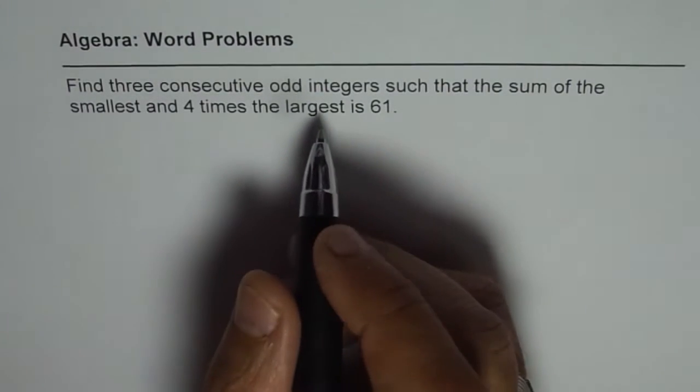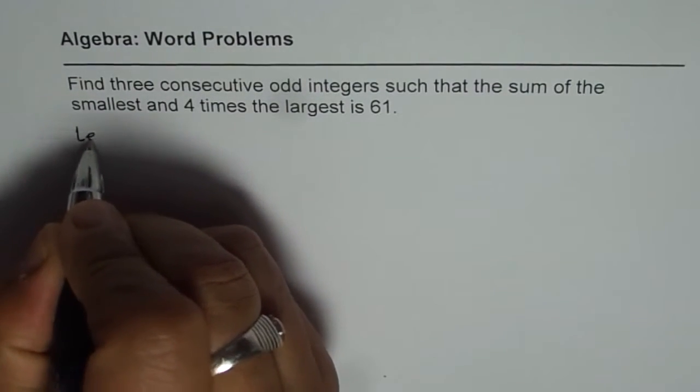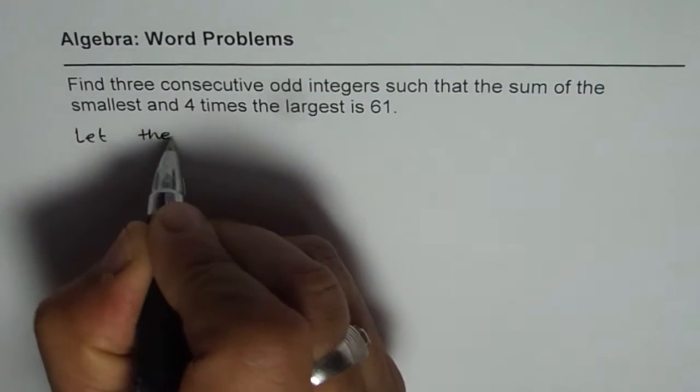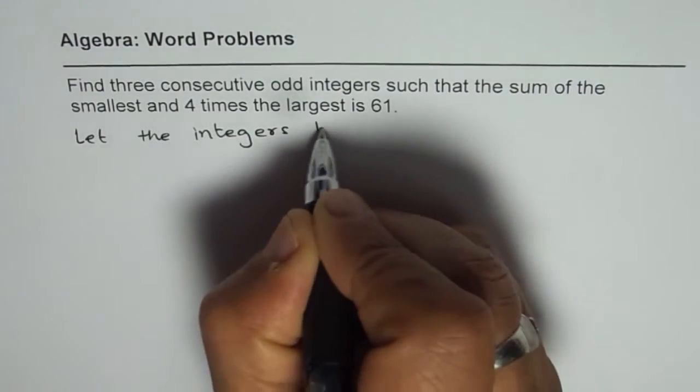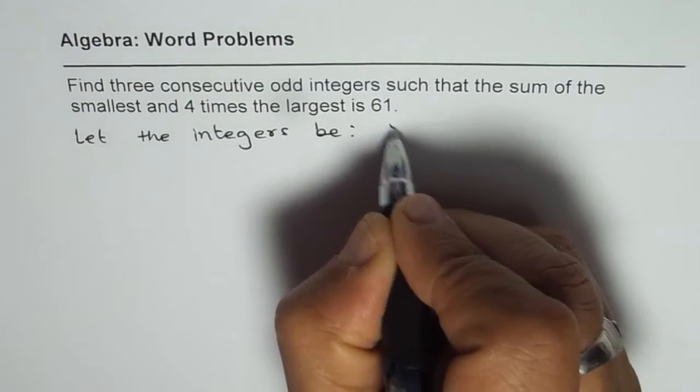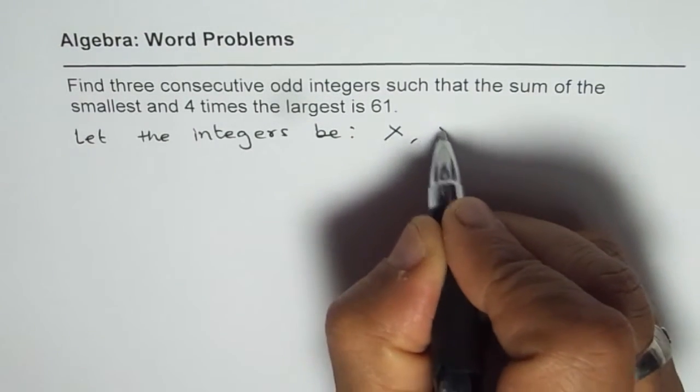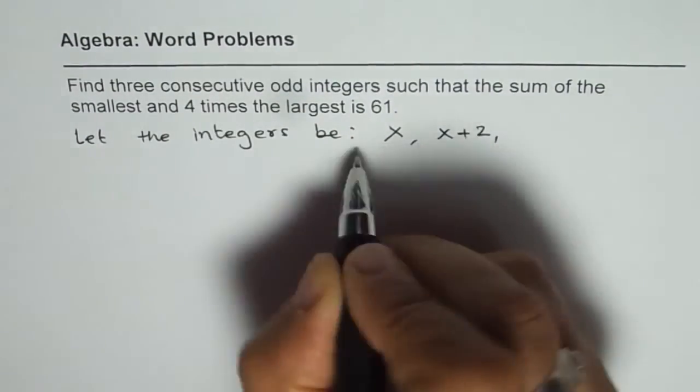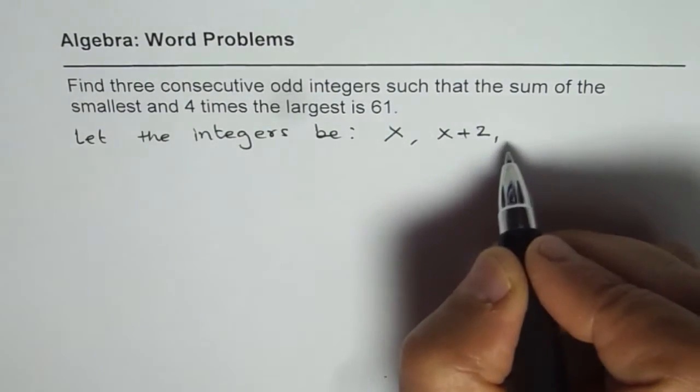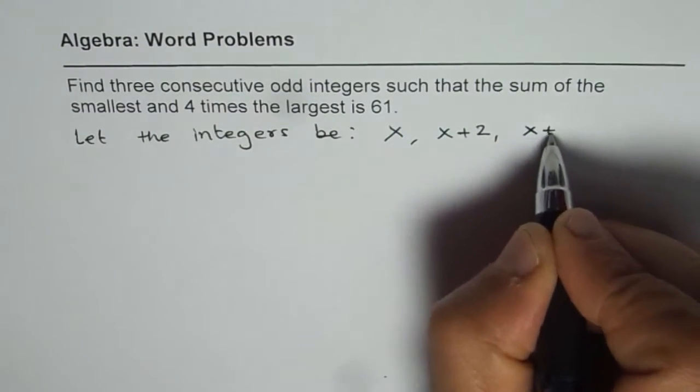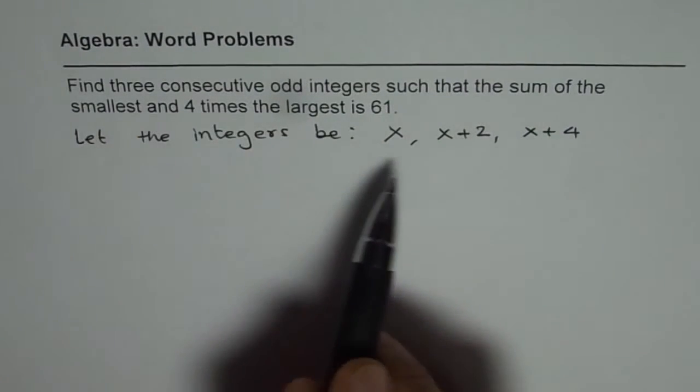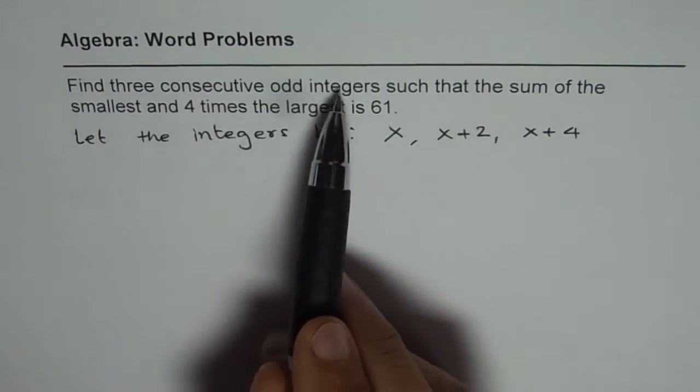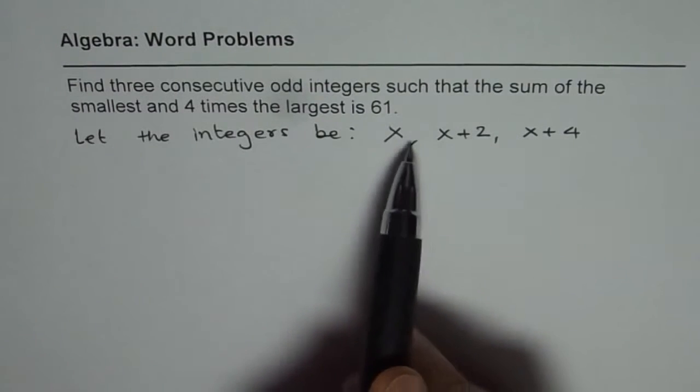So when we define the integers this time, we should say: let the integers be x, x+2, and x+4. If x is one of them, the next one should be x plus 2. That makes it odd, and then plus 2 will be another odd number, then x plus 4. That is critical when you define these odd integers - it ensures that all 3 are odd.